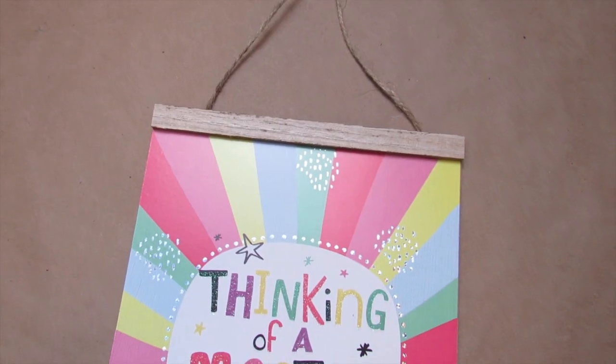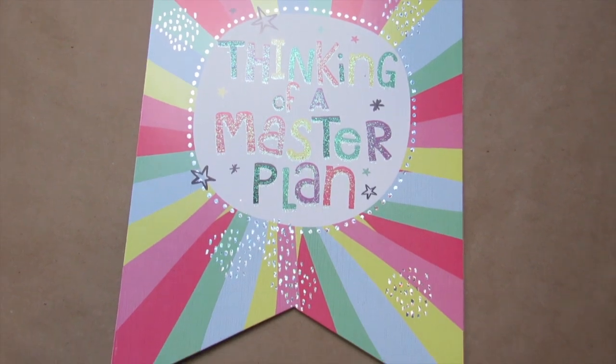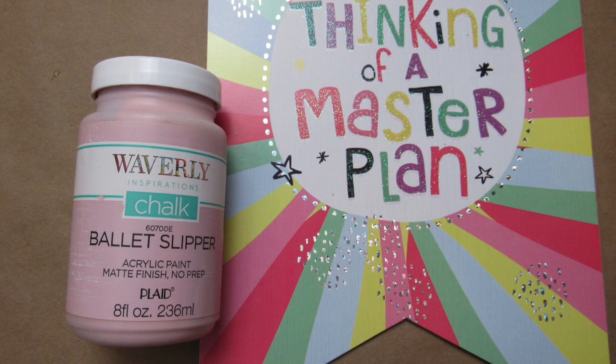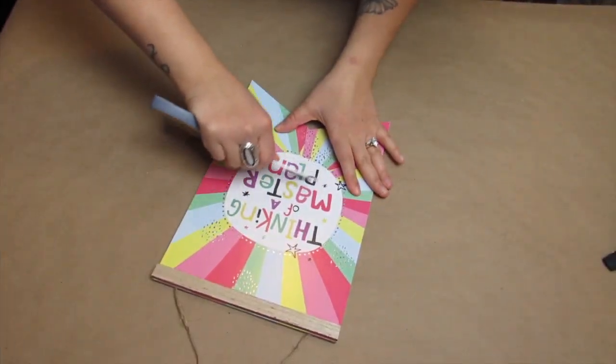For the first project, we're going to make a farmhouse wreath sign using this Dollar Tree pendant sign. I love these—my Dollar Tree always seems to have these in stock. I'm going to paint it with Waverly's chalk paint in Ballet Slipper.